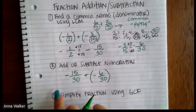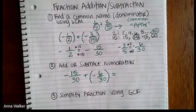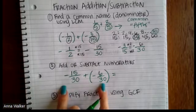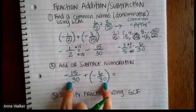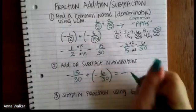So what we're going to do now is we are going to add or subtract the numerators. We are adding two negative numbers. So that means our answer is still going to be negative.